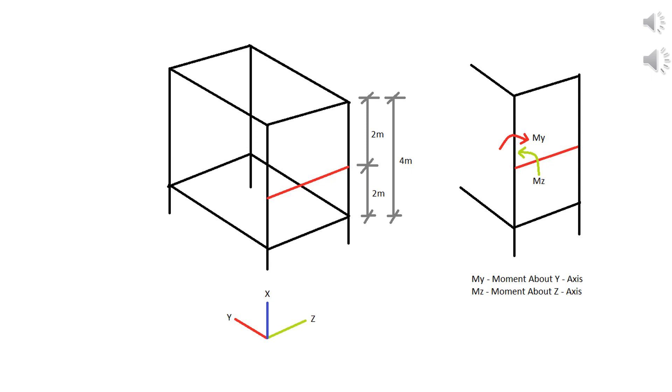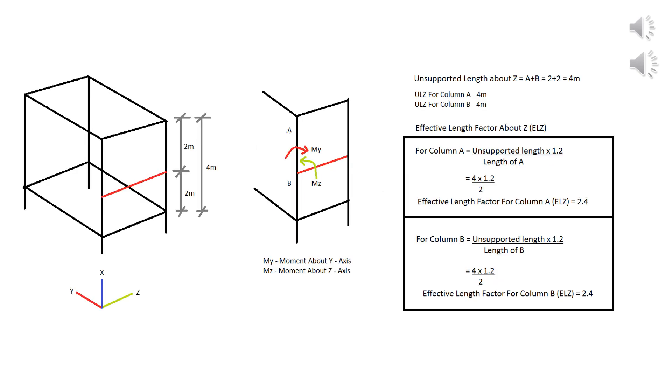Let us see how to calculate effective length factor for this example. About y-axis there is a beam tied and it will act as a restraint to column A at bottom and for column B at top. So unsupported length is 2 meter for column A and 2 meter for column B also. Effective length factor is 1.2, and this 1.2 can be replaced based on the support condition of the column. For example, effective length factor for cantilever column is 2, and this same can be referred in IS 456-2000.